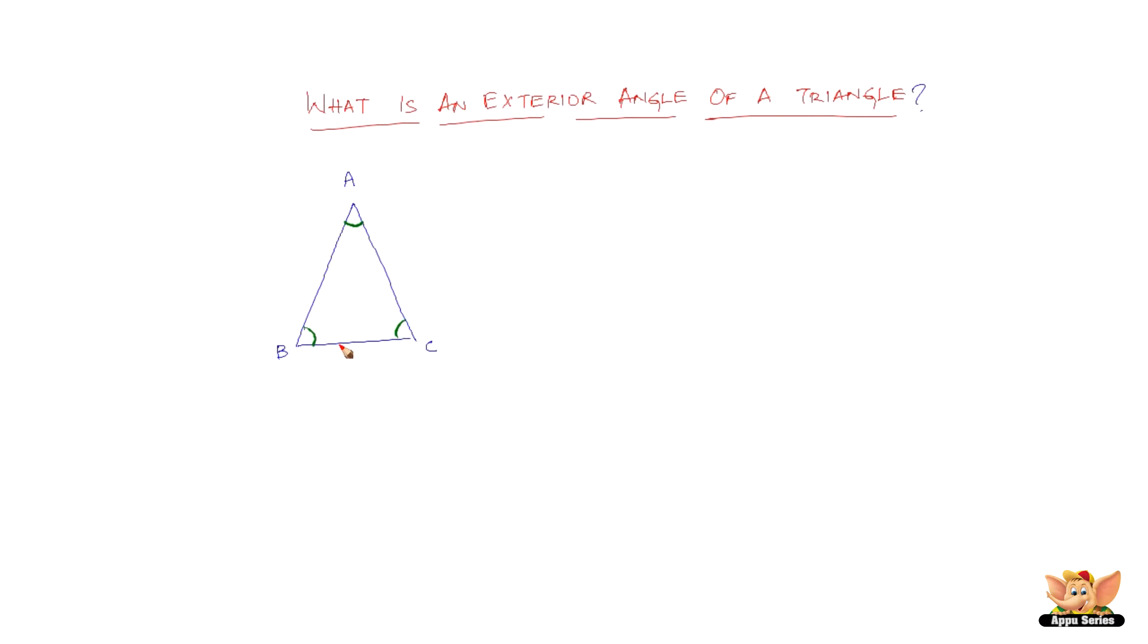Now, if we produce the line B, C, say, to meet at D, the angle formed here, that is angle A, C, D. So this is the exterior angle of this triangle, that is angle A, C, D.